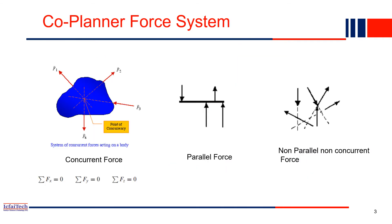What is a coplanar force system? In this course we will discuss mostly 2D structures. Consider a 2D body with four external forces F1, F2, F3, and F4 acting on it. If you can see that all the forces are acting through a single point, that system we call a concurrent force system — meaning all forces pass through a common point on the body.